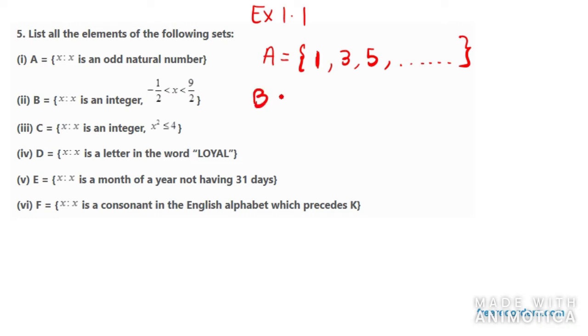Now in the next one, it says x is an integer. It lies between minus 1 over 2 and lies between 9 over 2. So in this we need to write integer. Take care of this term. It says only integer. Now my integer could be 0, 1, 2, 3 and we can have 4 as well. Because 8 over 2 is 4.